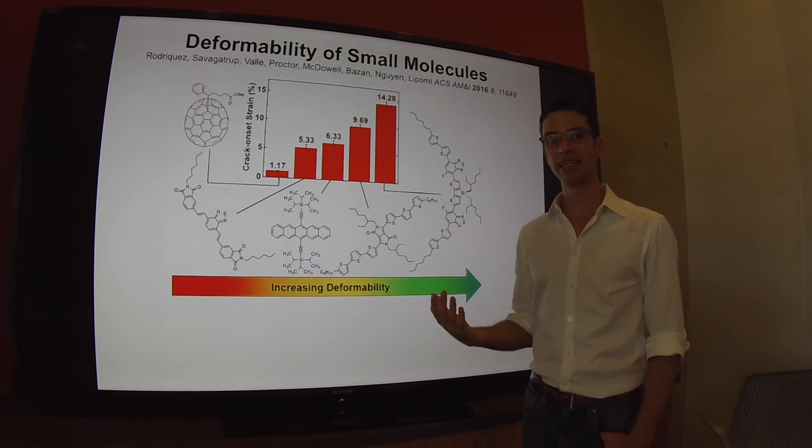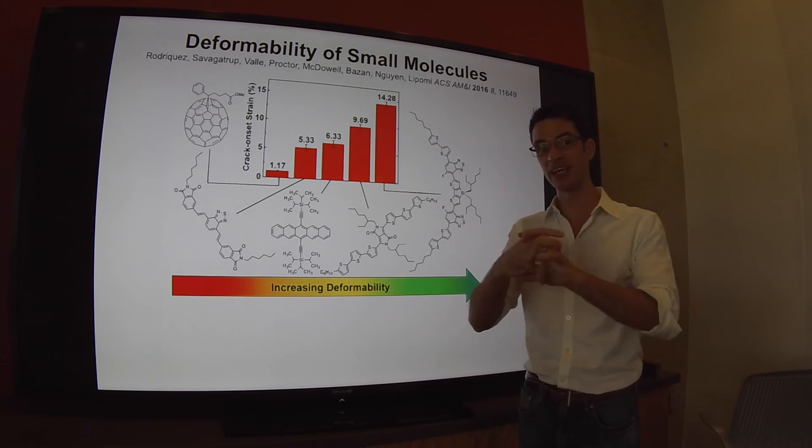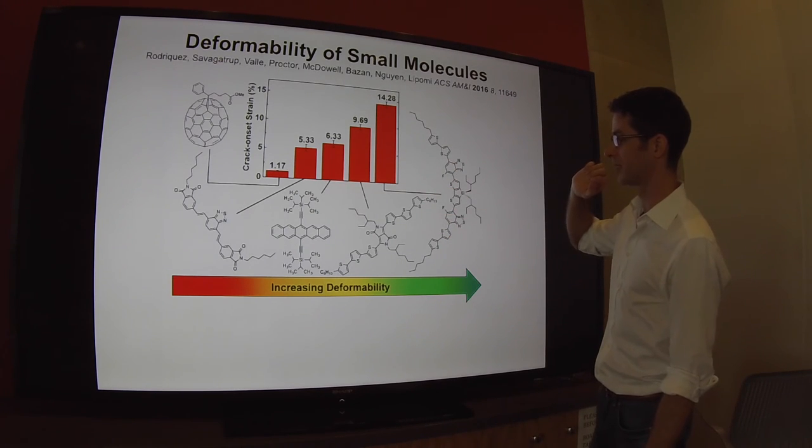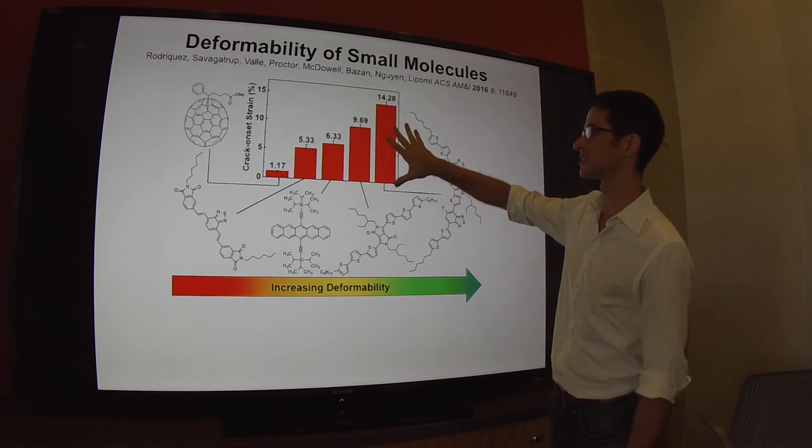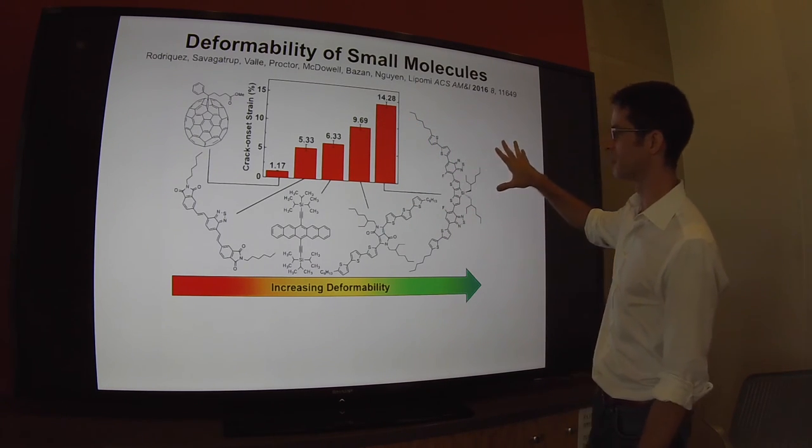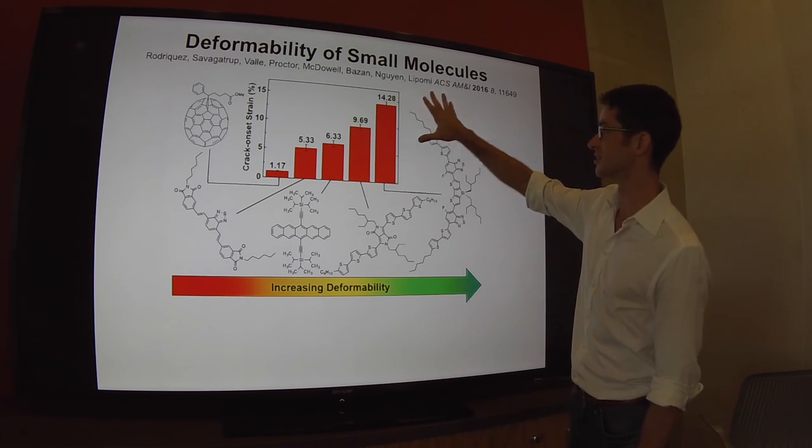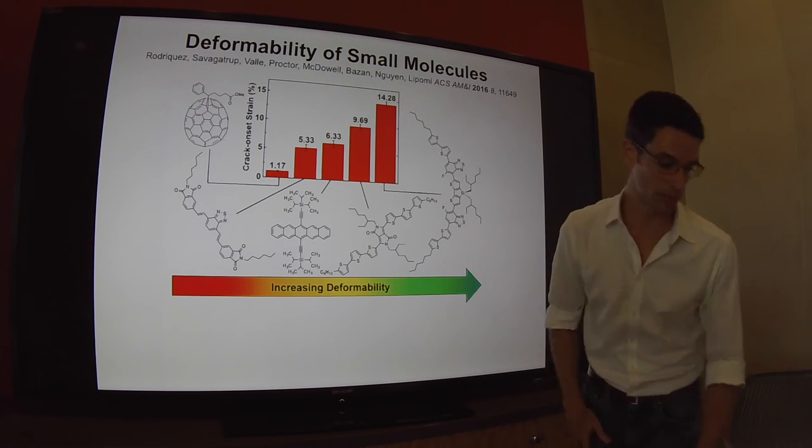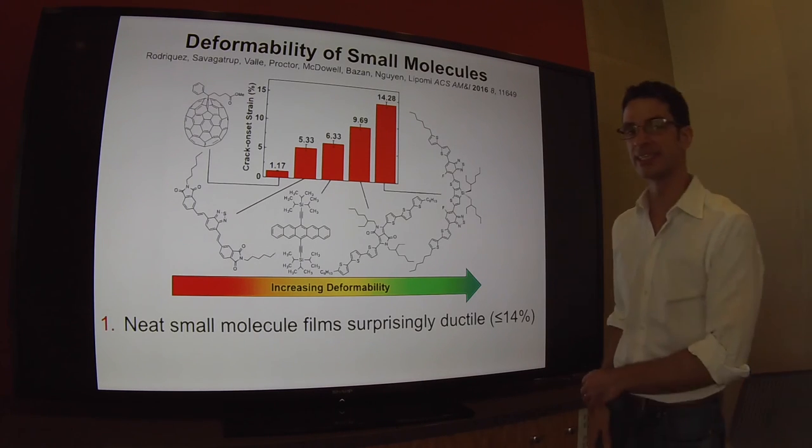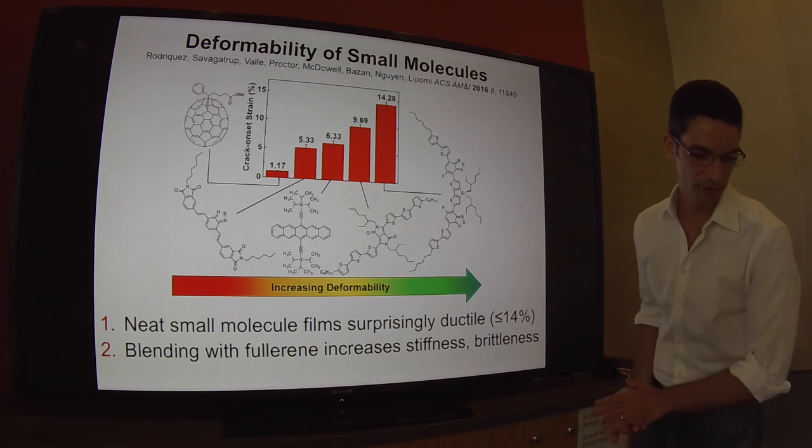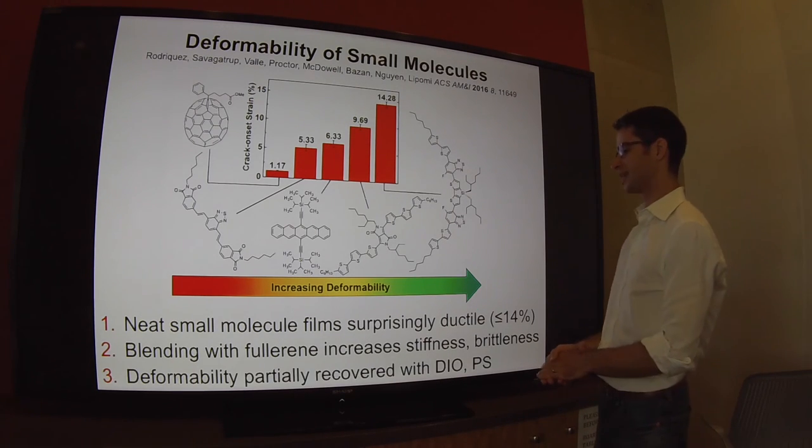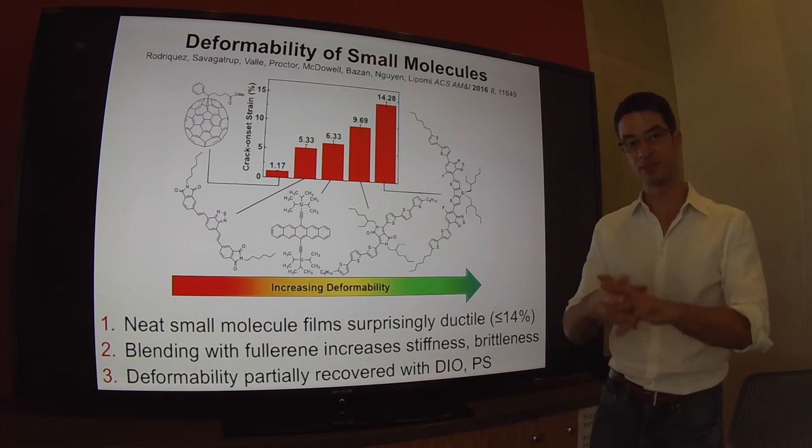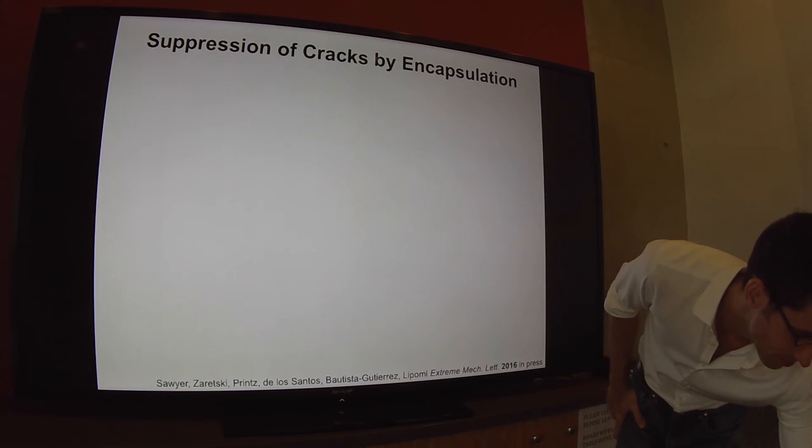We also looked at semiconducting small molecules because there's an idea in the literature that polymers are the way to go for extensibility. It turns out that small molecules are nearly just as good when one considers only crack onset strain. The neat small molecule films are surprisingly ductile. Blending with the fullerene increases the stiffness and brittleness, but the deformability can be partially recovered with diiodooctane additives and also polystyrene additives which increase the toughness.